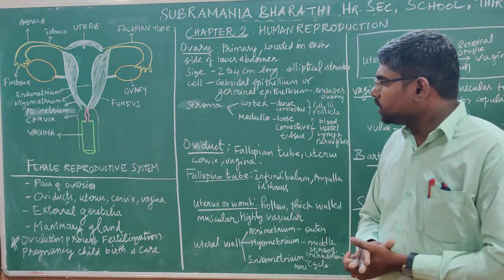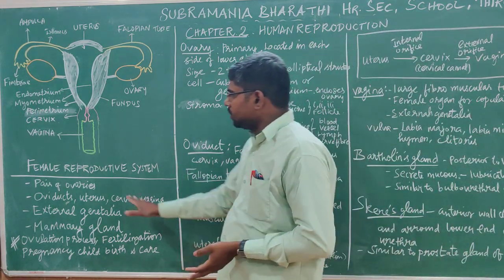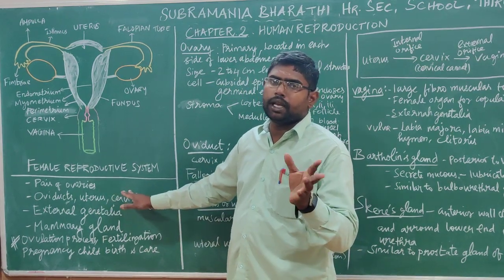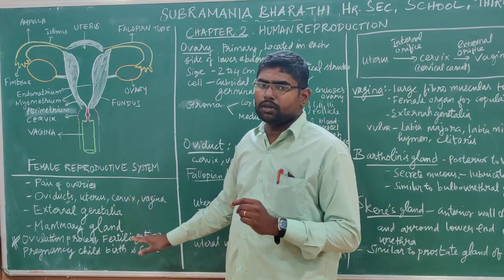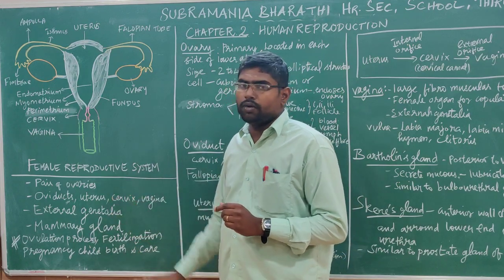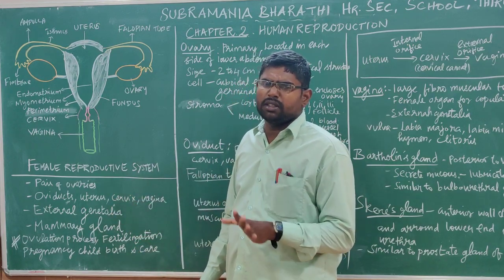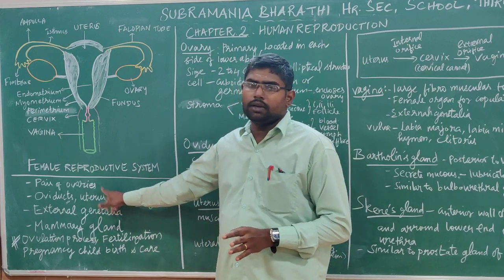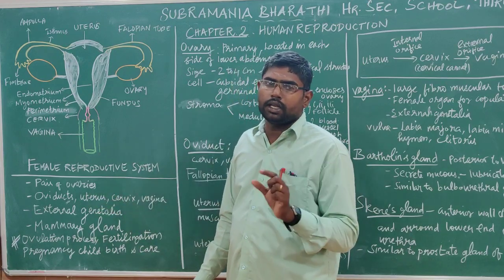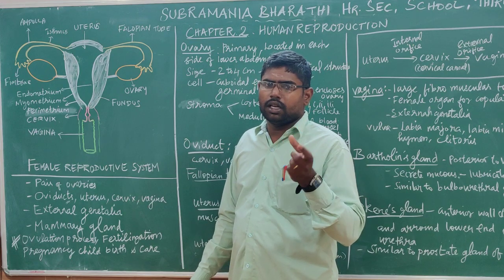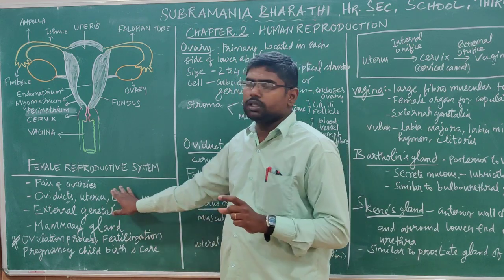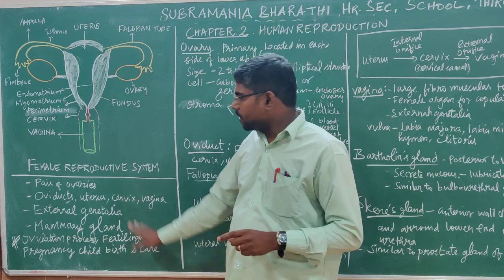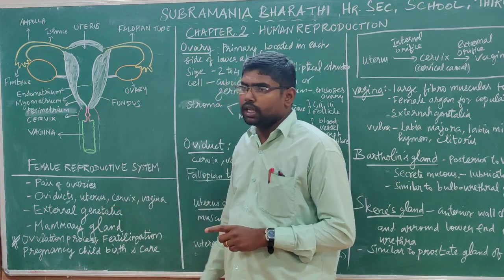First of all, there is a primary organ for the female reproductive system. The primary organ is responsible for forming a gamete — the egg. That primary organ is the ovary.